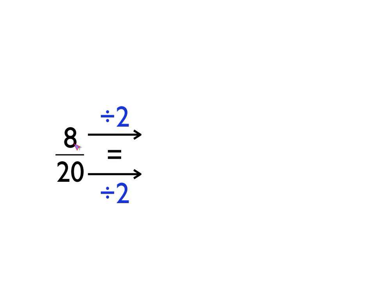The question you ask yourself when you're doing this is: can I think of a number which I can divide into eight and twenty? So if you look at the numerator and the denominator and ask yourself, can I find a number that divides a whole number of times into eight and twenty? Or another way of thinking of it: can I think of a number that's a factor of both eight and twenty? I can — two. Two goes into eight and two goes into twenty, so I'm going to divide the numerator and the denominator by two to find an equivalent fraction, which would be four tenths. Eight divided by two is four, twenty divided by two is ten.